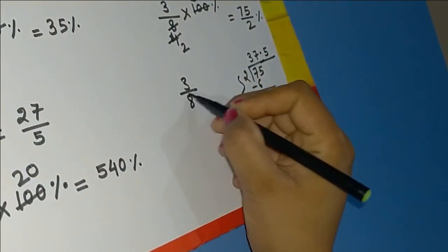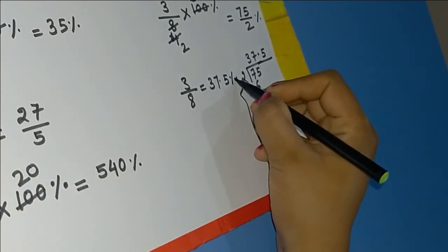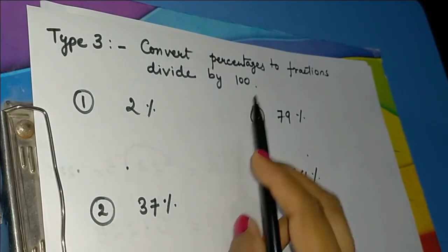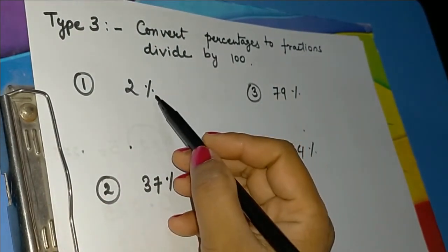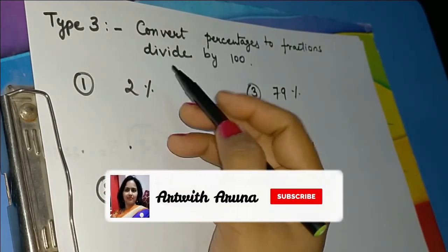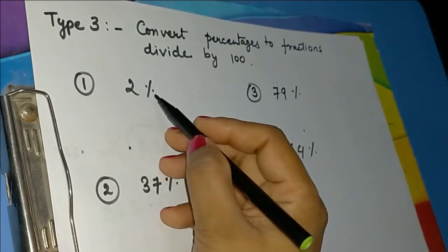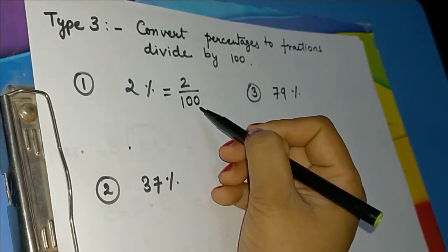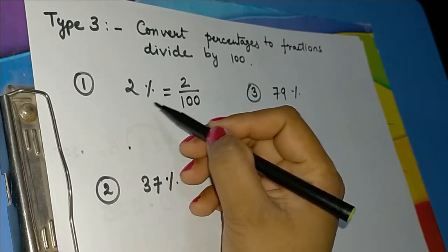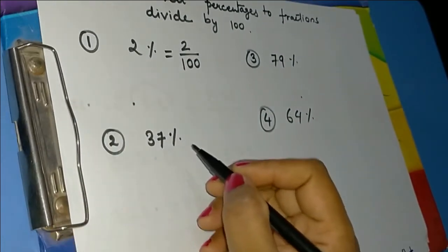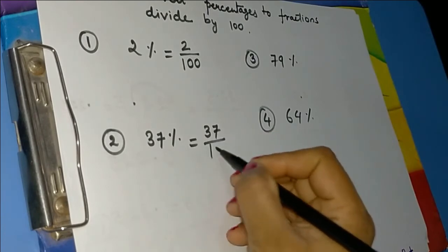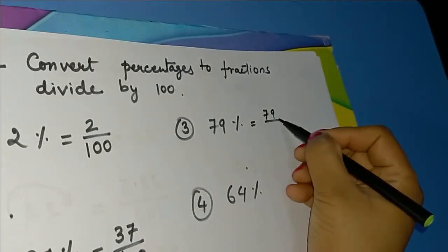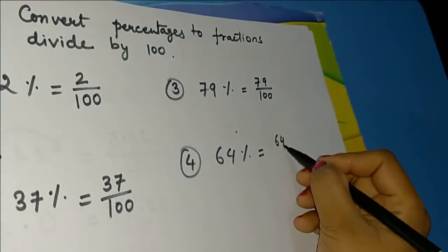The third type of question requires converting percentage into fractions by dividing by 100 — that is, placing 100 in the denominator. For example, 2 percent = 2/100, 37 percent = 37/100, 79 percent = 79/100, and 64 percent = 64/100.